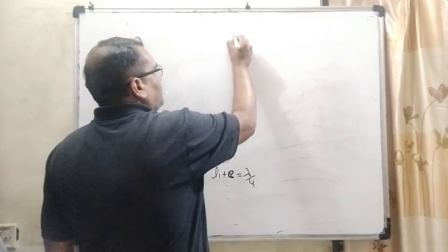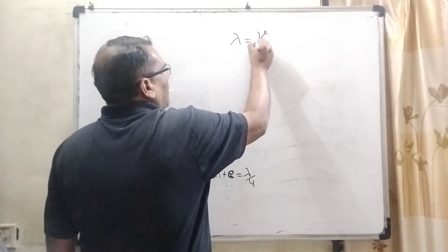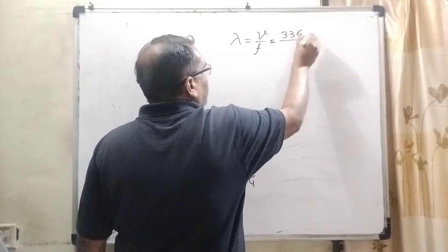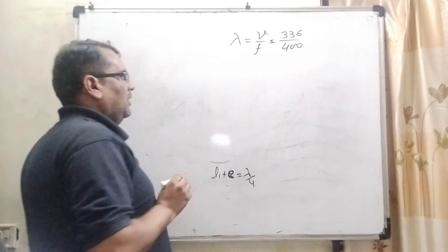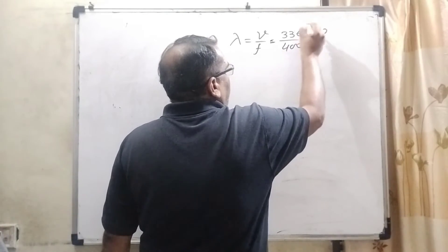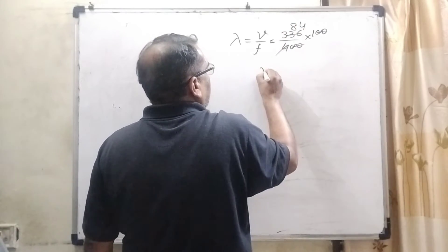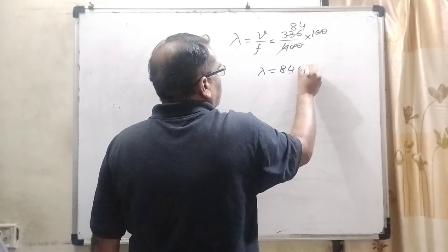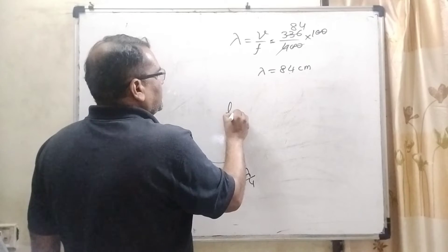First, let us find lambda. We have lambda equal to velocity divided by frequency. The velocity in air is given as 336 m/s and the frequency is 400 Hz. Now we convert to centimeters by multiplying by 100. This gives lambda equal to 84 centimeters.